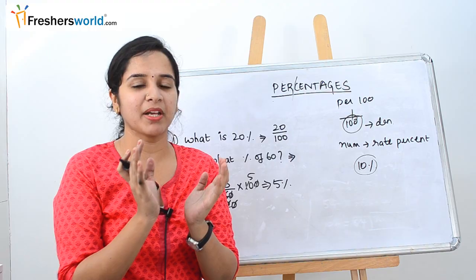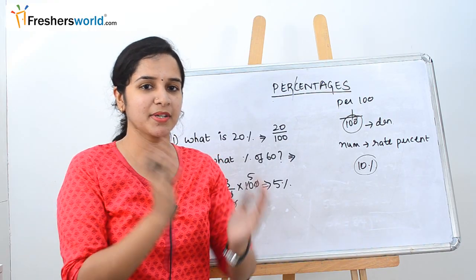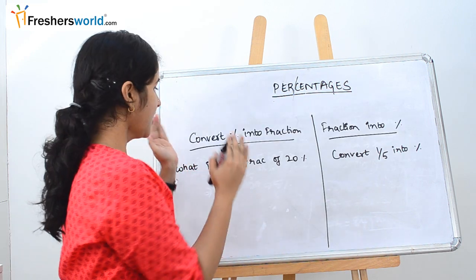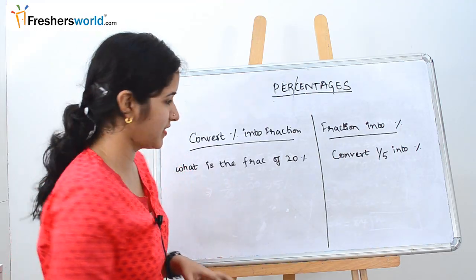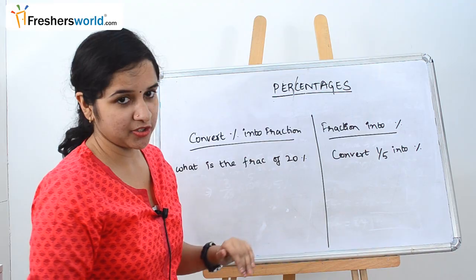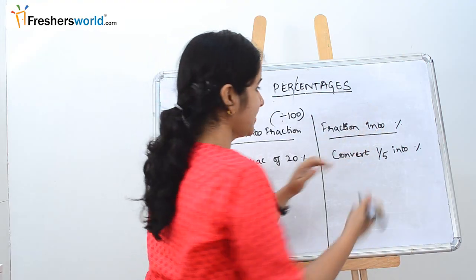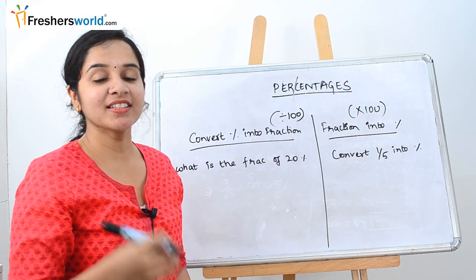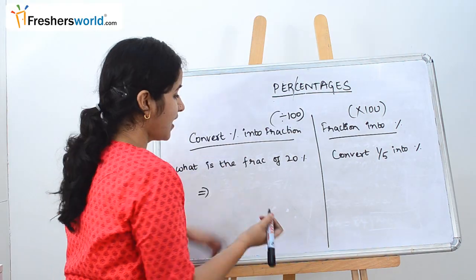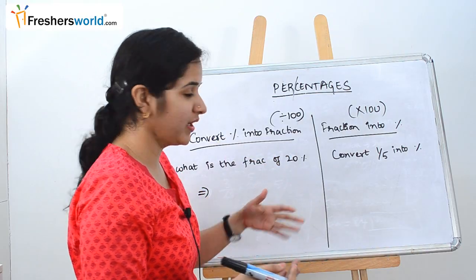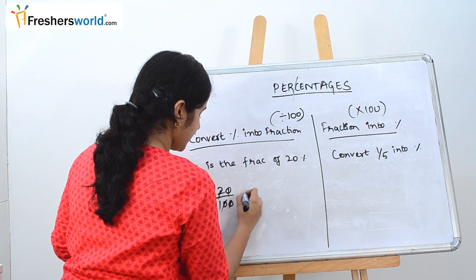You should understand why we are dividing by 100. Let's understand the concept of converting fractions into percentages and percentages into fractions. It's a very simple concept. For percentage to fraction, we divide by 100. For fraction to percentage, we multiply by 100. For example, what is the fraction of 20 percent? To convert 20 percent into a fraction: 20 divided by 100, which is nothing but 1 by 5.